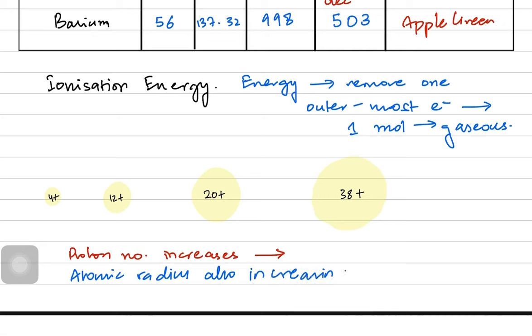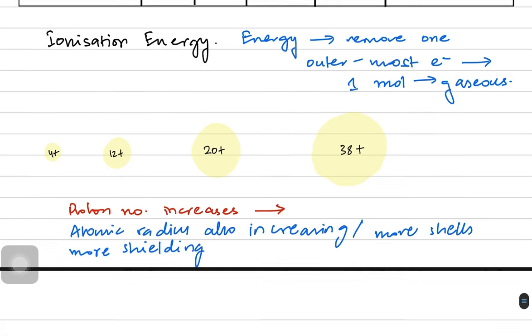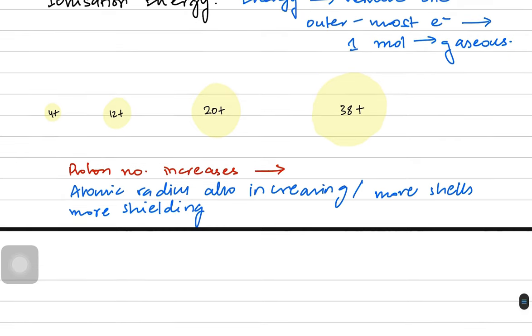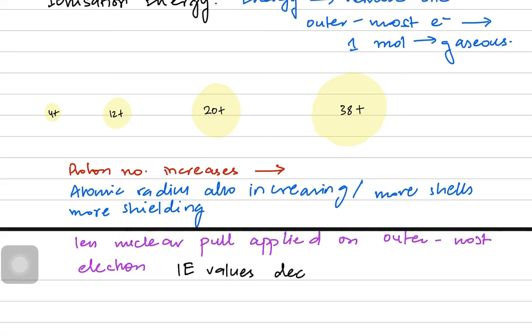Atomic radius increases because of more shells, and with more shells comes more shielding. The inner shells block the nuclear pull on the outermost electrons, so there's less nuclear pull applied on the valence electrons. When outermost electrons experience less nuclear pull, it's easier to remove them, which is why ionization energy values decrease down the group.